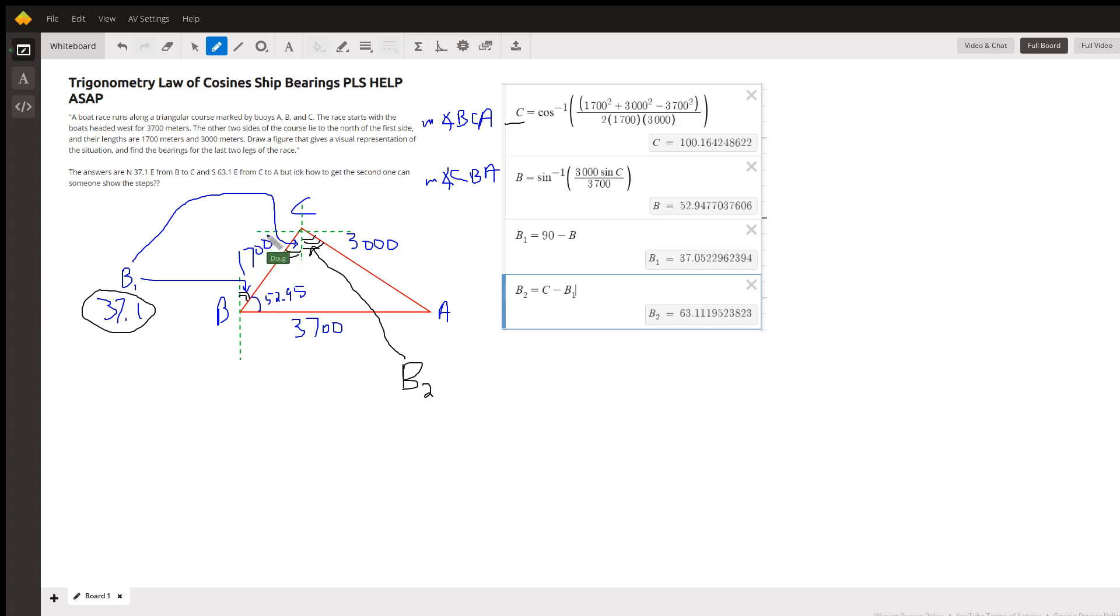...because we've got two parallel lines—these two vertical lines cut by this transversal—so alternate interior angles are congruent. If that's 37.1 and all of angle C is 100 degrees, 100 take away 37.1 leaves 63.1 degrees. That's B₂.